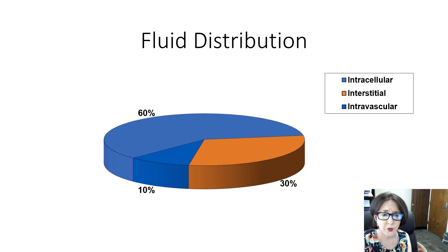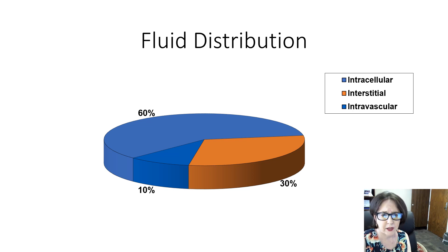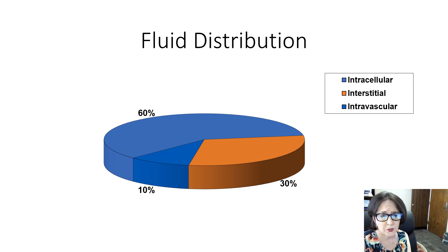Water makes up about 60 percent of the body weight in an adult; in infants that's about 75 percent. Water is contained in the intracellular and extracellular spaces. Two-thirds or 60 percent of water is in the intracellular space of the muscles and the organs. The remaining third is within the extracellular space — the interstitial fluid that bathes the cells — and the intravascular space, or blood vessels. Note that the smallest volume of water is actually in the blood vessels.